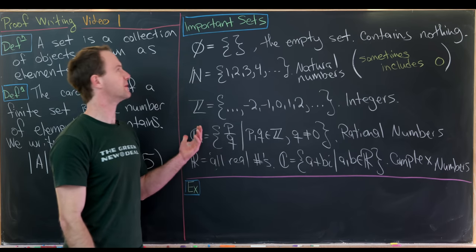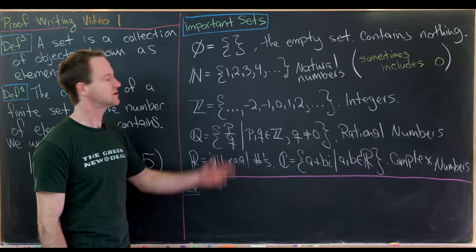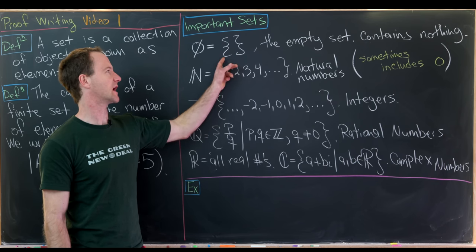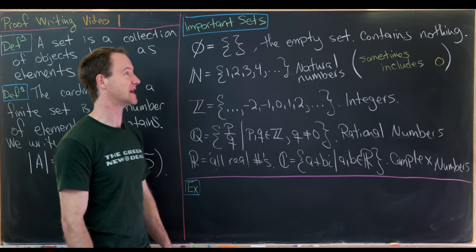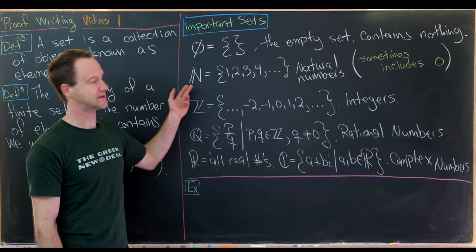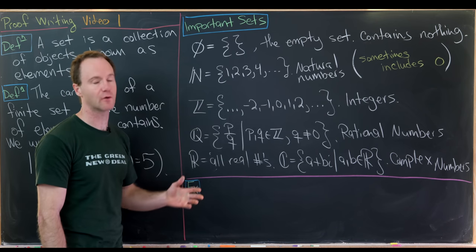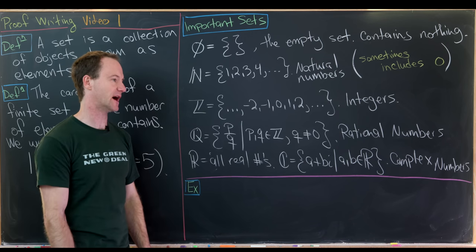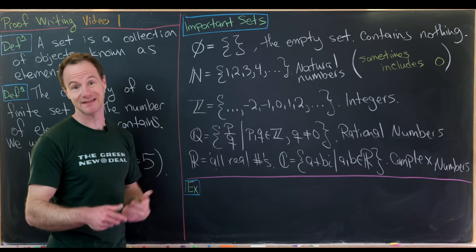Now let's look at some important sets we'll see over and over again. The first is called the empty set, denoted by this symbol or by empty curly braces — the important thing is there's nothing inside, it contains no elements at all. The next important set is the natural numbers, which includes all positive integers: 1, 2, 3, 4, 5, and so on. Sometimes that includes 0 depending on who you ask, but for this course we will mostly not include 0.